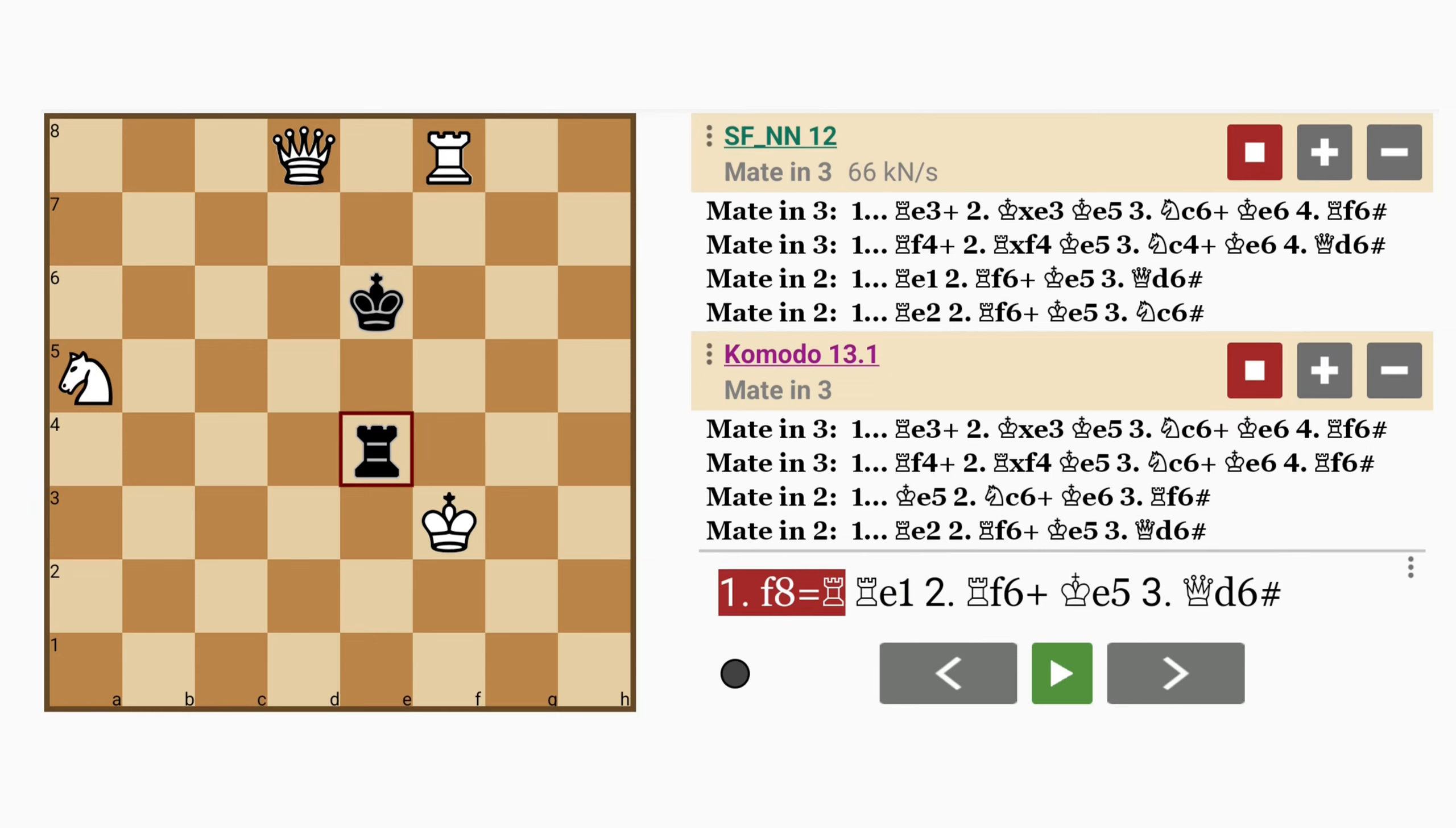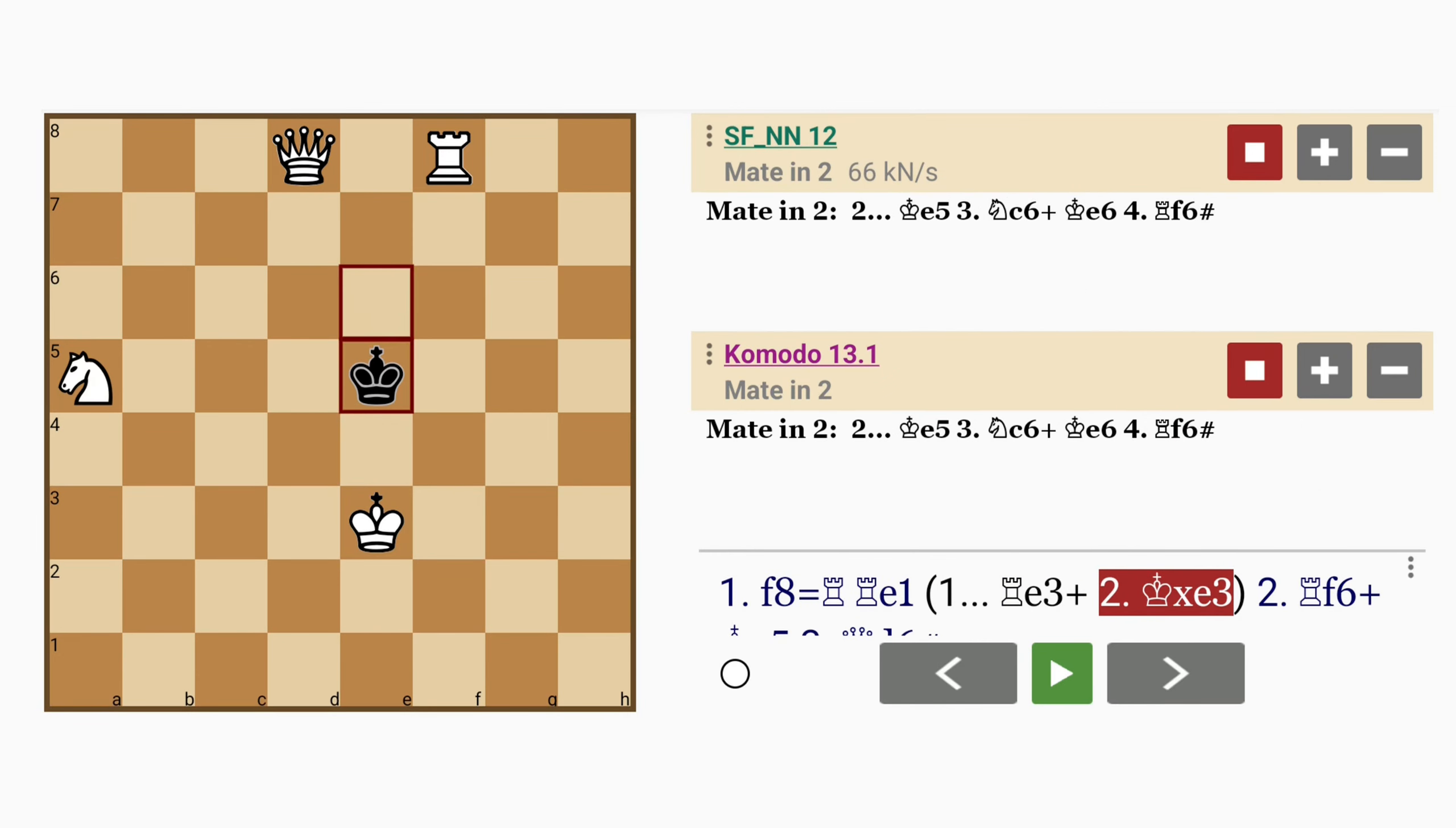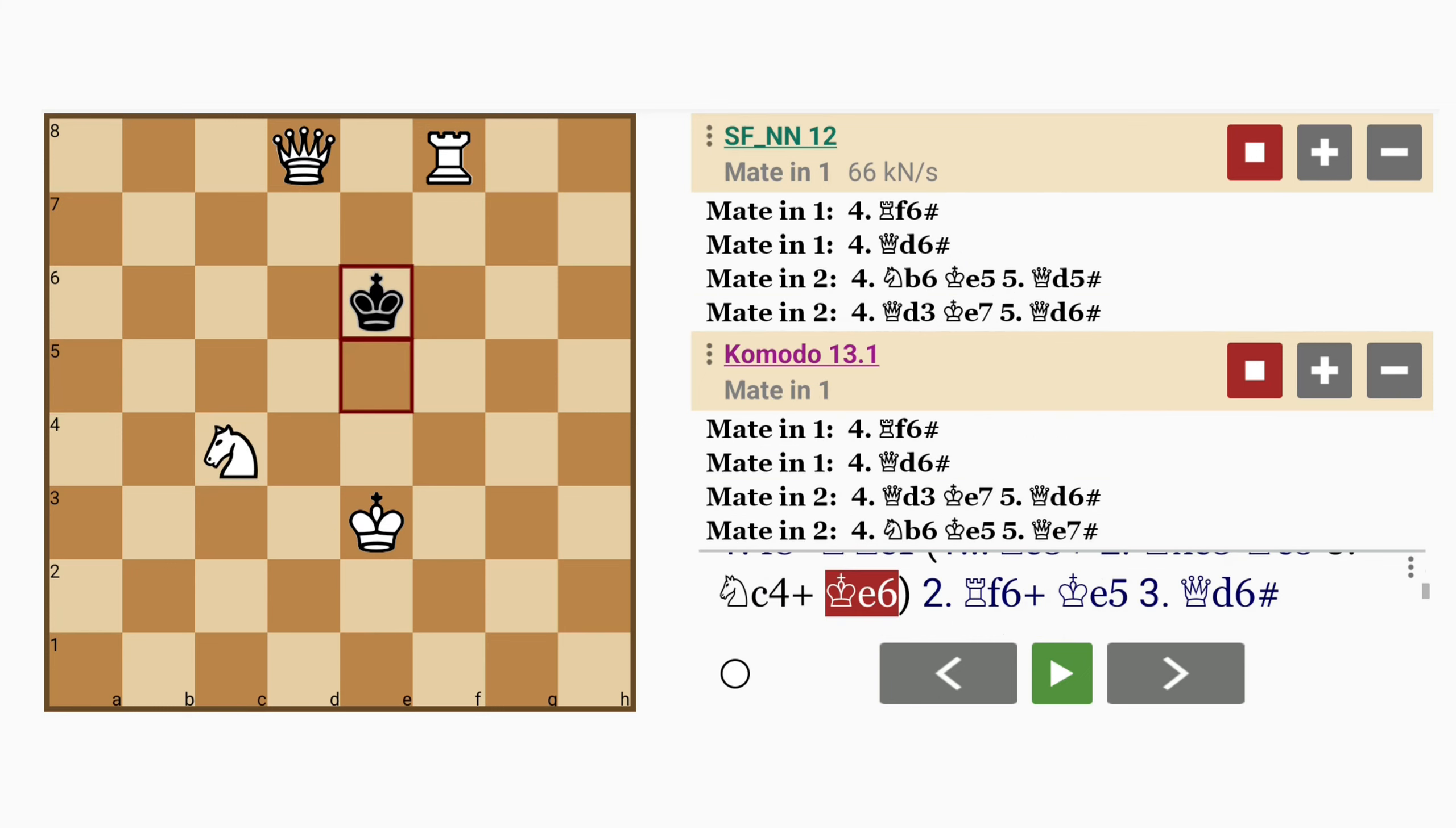Now black can last the longest if he buys time with rook to e3 check. The king just captures this rook, king to e5, the only move. And here there's so many ways to proceed. For example, knight to c4 check, king back to e6 and rook to f6 mates.